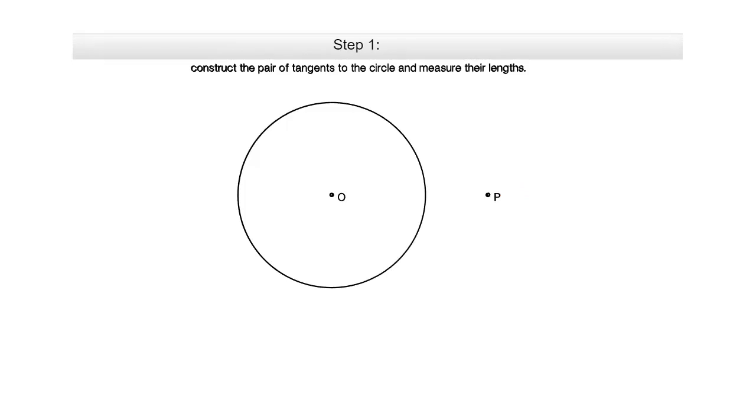So now let us start with the steps to draw the tangent. So the first step is to join the point PO and then bisect it. So here are the two points O and P. We need to join this first and then we need to draw the bisector for this line. And once you have drawn the perpendicular bisector, we will get the midpoint of the line OP.